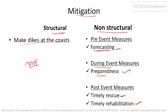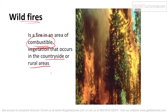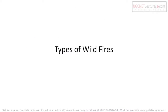The next natural disaster is wildfires. Wildfire is a fire in an area of combustible vegetation that occurs in the countryside or rural areas. Combustible means materials that can easily catch fire — like dry forests with dry wood. Wildfires mainly occur in countryside, villages, rural areas, and forests.